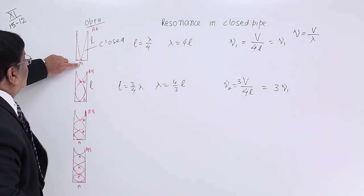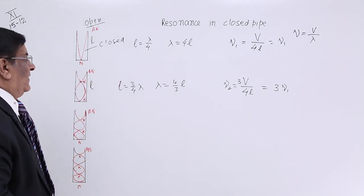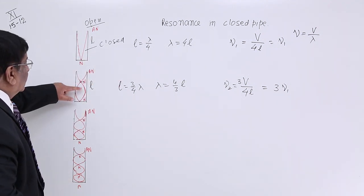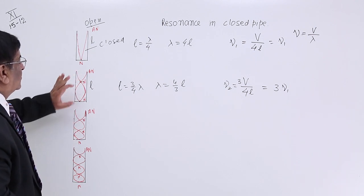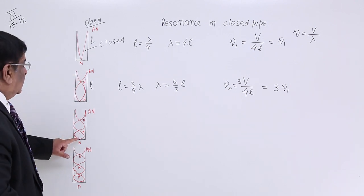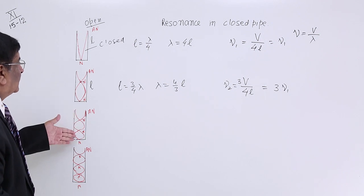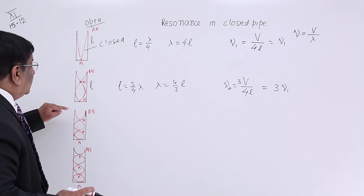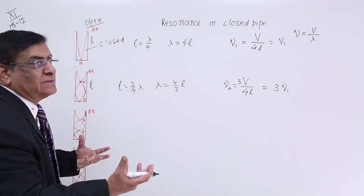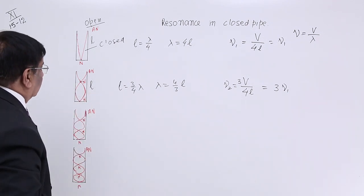And in between we don't listen any other frequency. Now after this there is a formation of 3 nodes. 2 after 2 there has to be 3. So this is another type of vibration which is happening at the same time. So this sound also comes to us. What is the frequency of this sound?